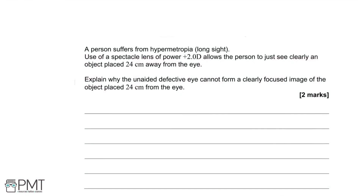A person suffers from hypermetropia or long sight. Use of a spectacle lens of power plus 2.0 D allows the person to just see clearly an object placed 24 cm away from the eye. Explain why the unaided defective eye cannot form a clearly focused image of the object placed 24 cm from the eye.